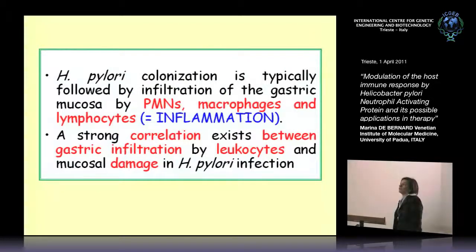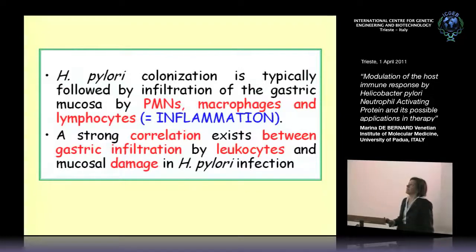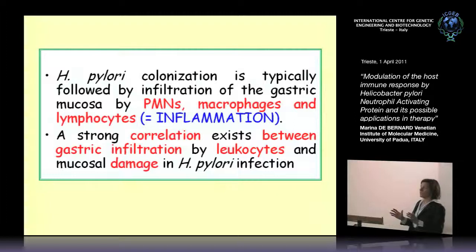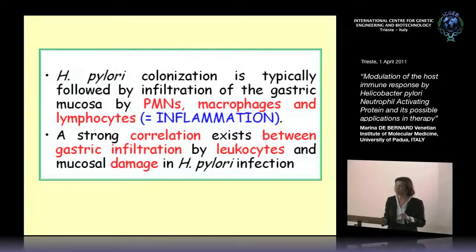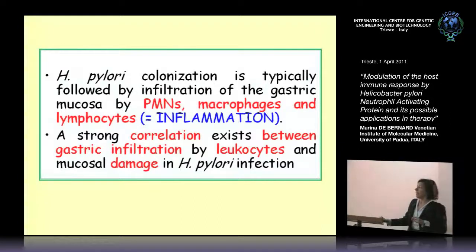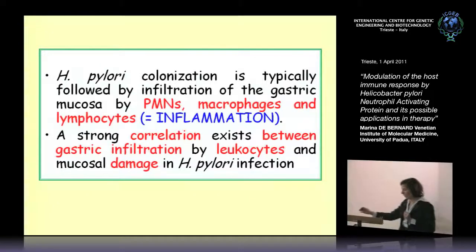H. pylori colonization is typically followed by infiltration of the gastric mucosa by polymorphonuclear cells, macrophages and lymphocytes, and the recruitment of these cells from the blood is part of a more complex process called inflammation. A strong correlation exists between gastric infiltration by leukocytes and mucosal damage in H. pylori infection.